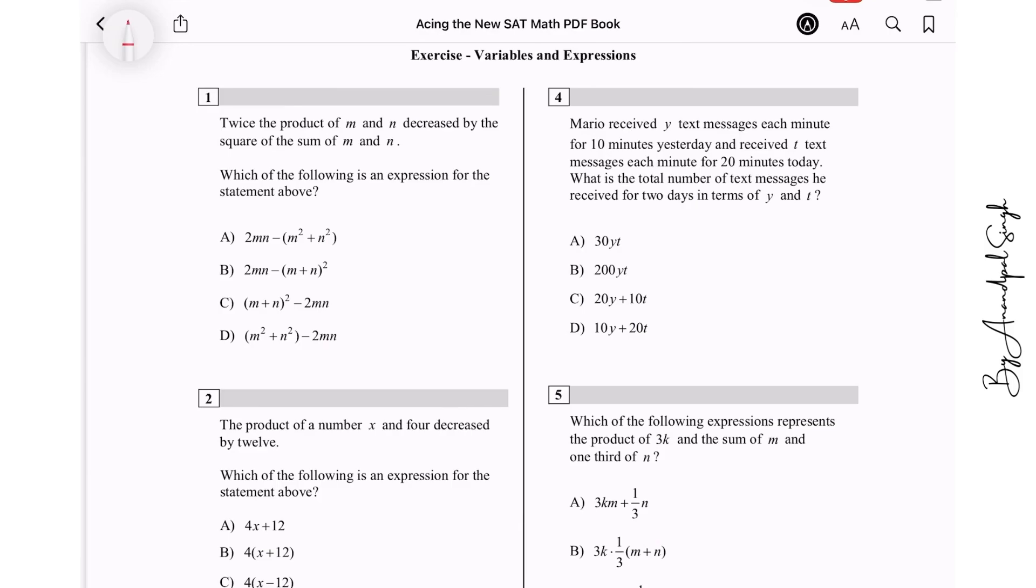Let us start with question number one of these variables and expressions. The first question is twice the product of M and N decreased by the square of the sum of M and N. Twice the product, so it is 2 times MN, decreased by the square of the sum of M and N. It is not the sum of the squares, it is square of the sum, so we write square of the sum. We just square the sum, so the answer is B.